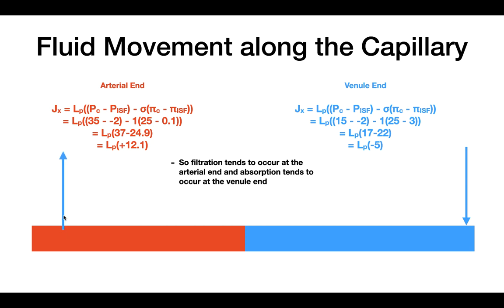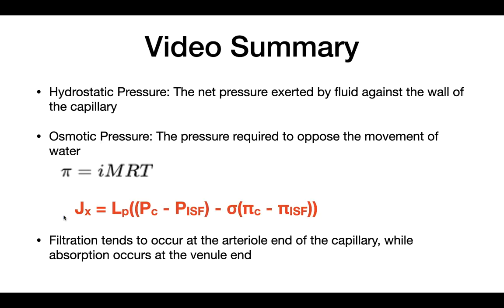In summary, we talked about what hydrostatic pressure and osmotic pressure are, how to calculate osmotic pressure using the Van't Hoff equation, and how to calculate the flux of fluid using the Starling equation. We learned that a positive flux means filtration and a negative flux means absorption. Lastly, we saw how filtration tends to occur at the arterial end of the capillary while absorption occurs at the venule end. I hope this helped you understand how fluid moves in the capillary — good luck with your studies.